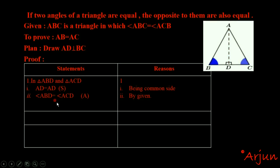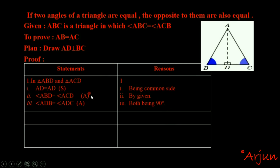Second, angle ABD is equal to angle ACD, given. Third, angle ADB is equal to angle ADC — both are 90 degrees, since AD is perpendicular to BC by construction.